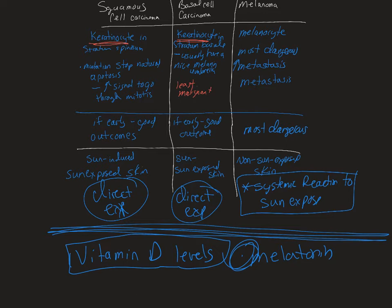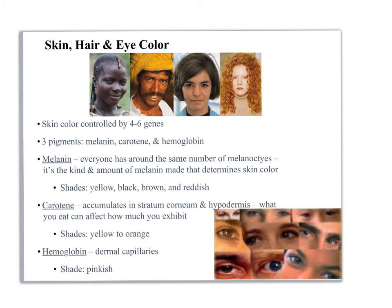The next thing we're going to talk about is skin color. Skin color, hair color, and eye color are all interrelated. There are about four to six genes that control these coloration patterns, making this a polygenic trait. That means those online tools that predict what color eyes your child will have don't really work, because it's not a Mendelian trait — it's polygenic and actually really complex. To simplify it, we're going to focus on the pigments rather than the genes. We've got three major ones: melanin, carotene, and hemoglobin.